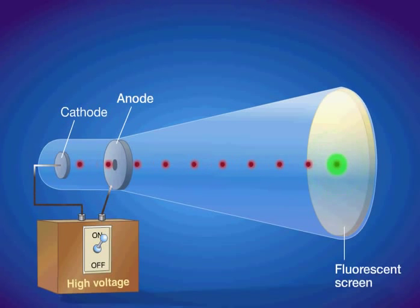When the ray strikes the specially coated surface, the cathode ray produces a strong fluorescence or bright light.